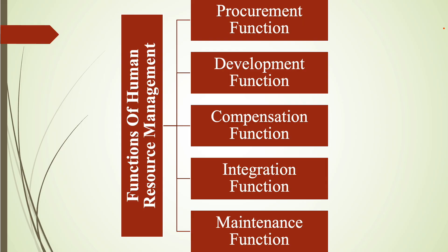There are five basic functions of human resource management: procurement function, development function, compensation function, integration function, and maintenance function. We will now discuss each of these functions one by one in the upcoming slides.